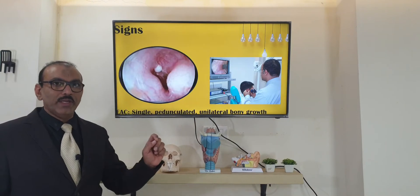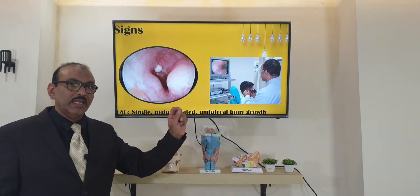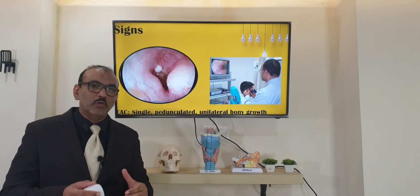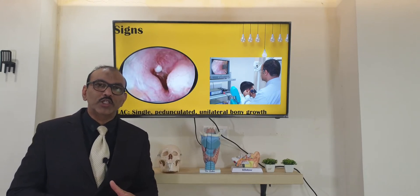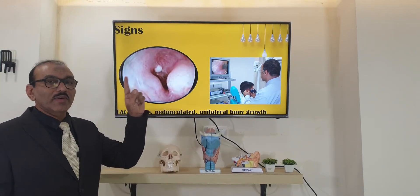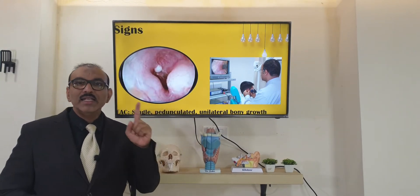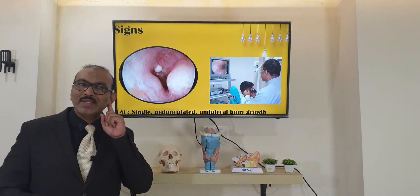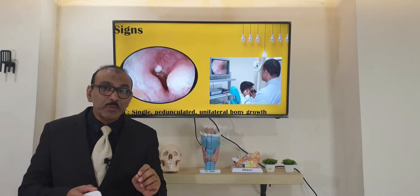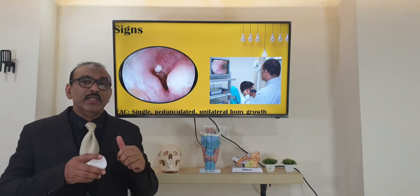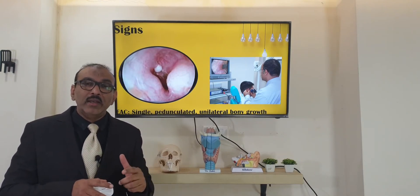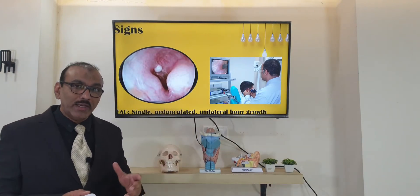On examination, when you see the external ear with the help of a camera so that you can visualize well, you will see a small osteoma which is single, seen only in one side, and seen at the suture line. The reason I am specifying it is single, seen only in one side, and seen in the suture line is because there is one more condition.